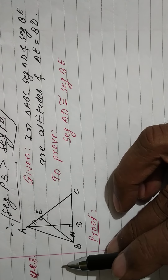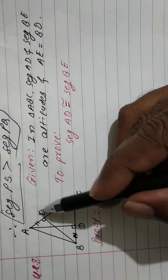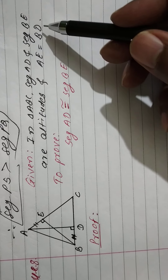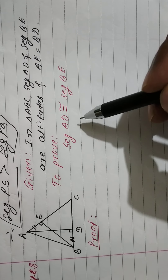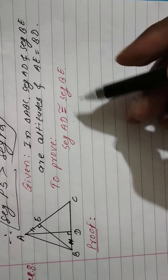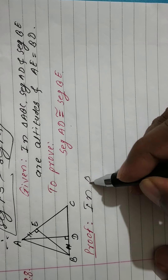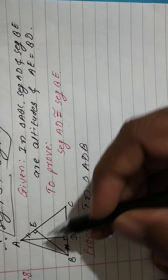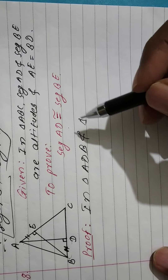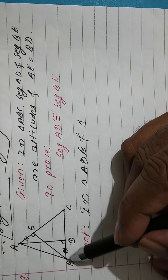Now, last question number 8. In triangle ABC, segment AD and segment BE are altitudes — given. In triangle AE equals BD — this is given. To prove: segment AD is congruent to segment BE. Proof: I take triangle ADB and triangle BEA.